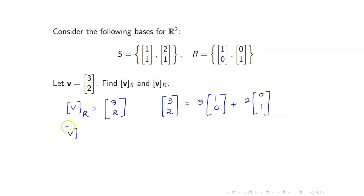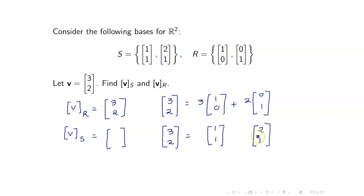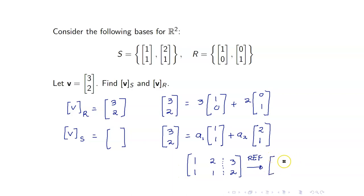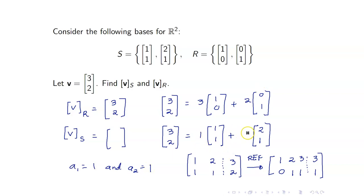However, when we want to compute the coordinate vector of V with respect to S, we first have to write [3, 2] as a linear combination of the elements in S. We look for A1 and A2 such that A1 times [1, 1] plus A2 times [2, 1] equals [3, 2]. Forming the augmented matrix and transforming it into row echelon form, we get A1 equals 1 and A2 equals 1. So the coordinate vector of V with respect to S is [1, 1].